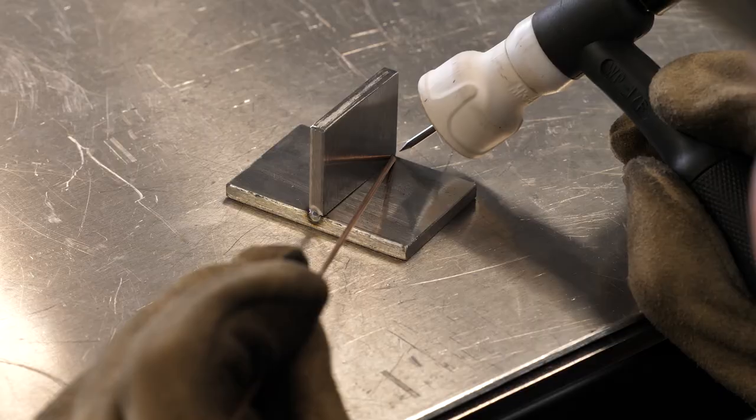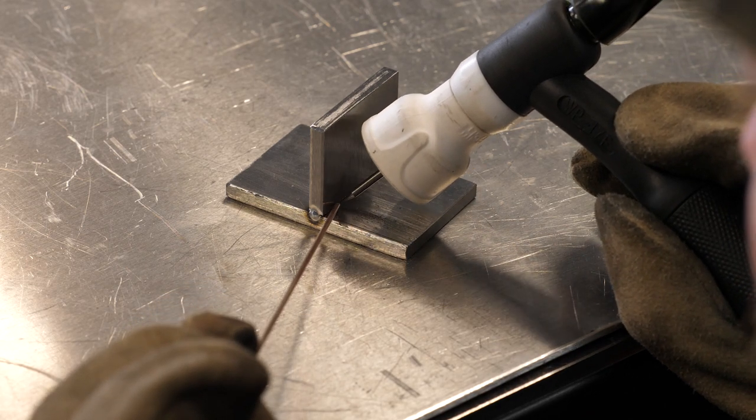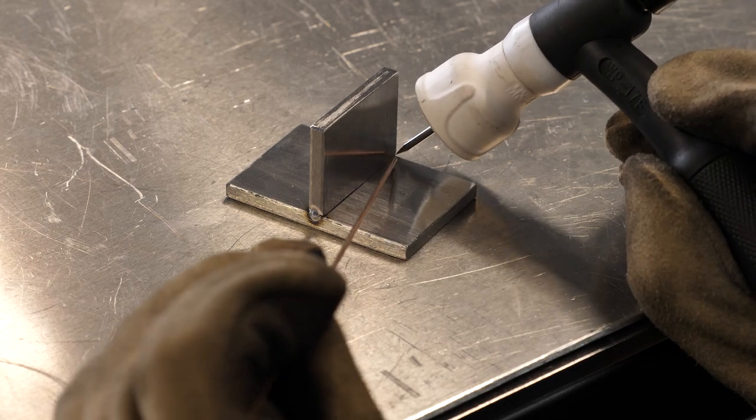For 90 degree corner welds, we want to have the torch at a 45 degree angle to the corner, which means that we're favoring both edges of the weld evenly while still maintaining the 15 degree angle in the direction of travel.